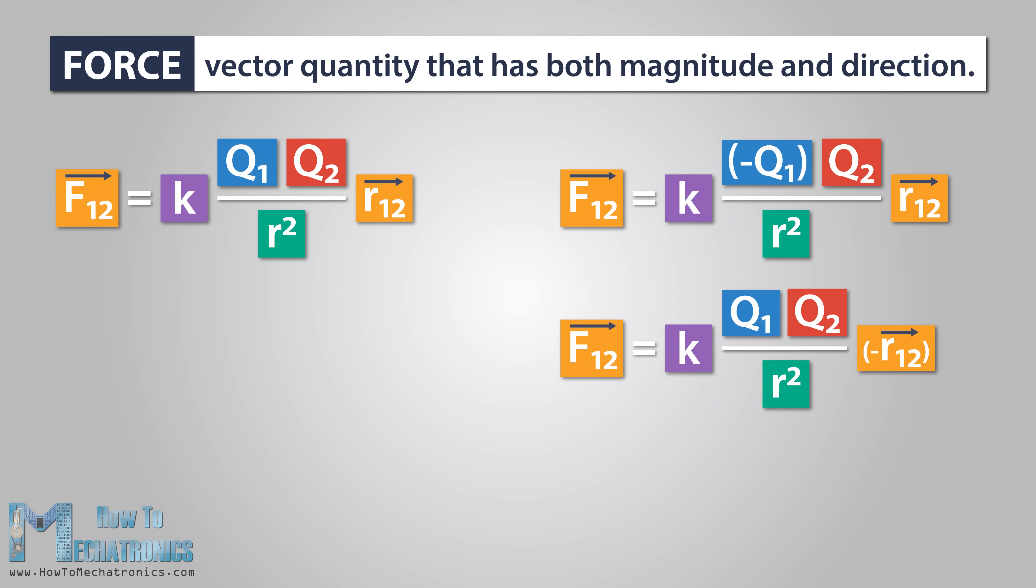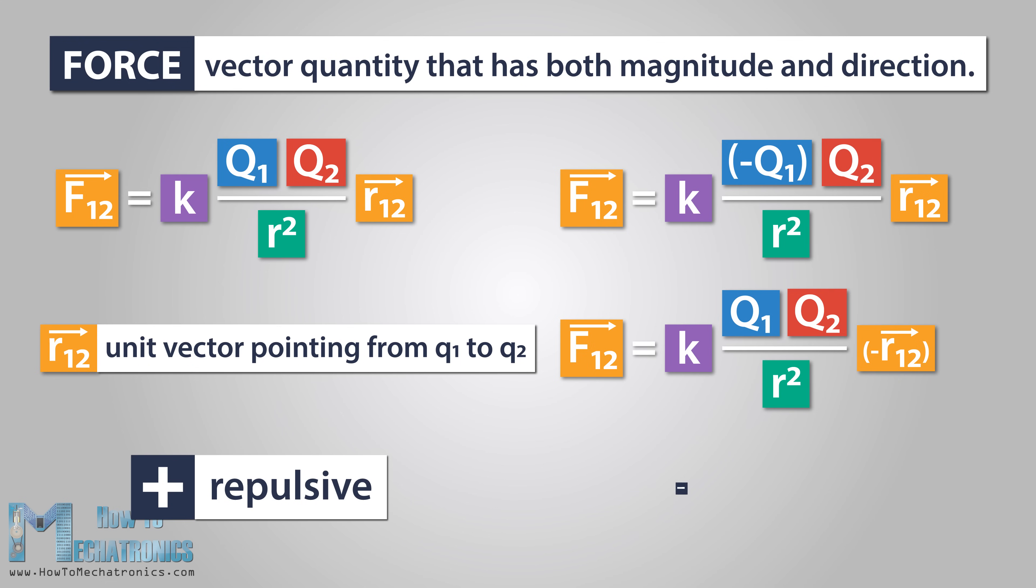The arrows in the equation represent a vector quantity. This sign means that this is a unit vector pointing from Q1 to Q2, and the index means that Q1 exerts force onto Q2. If we get a positive value, it means that the direction of the force is repulsive. On the other side, the minus sign means that the direction of the force is opposite or attractive.